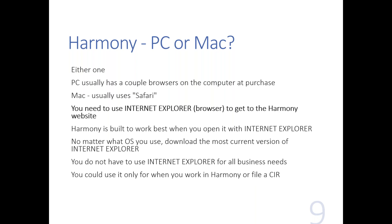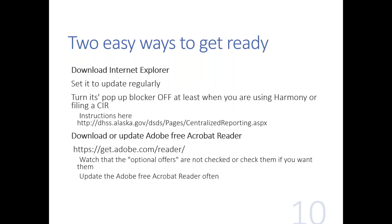I get a lot of questions about whether you need a PC or a Mac — you could actually have either one. A PC usually has a couple of browsers when you purchase it; Mac usually has Safari; PC sometimes has Internet Explorer or Firefox. Harmony is built to work with Internet Explorer, so no matter what operating system you use, you can download the most current version of Internet Explorer. You do not have to use Internet Explorer for all your business needs — just when you work in Harmony or file a critical incident. You can download Internet Explorer, set it to update regularly, and turn its pop-up blocker off when using Harmony. Directions on how to turn a pop-up blocker off are on our main web page or in the downloadable guide.